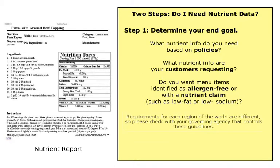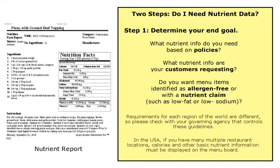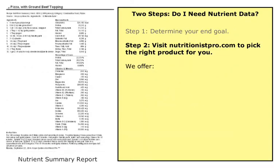Requirements for each region of the world are different, so please check with your governing agency that controls these guidelines. For example, in the USA, if you have multiple restaurant locations, calories and other basic nutrient information must be displayed on the menu board.